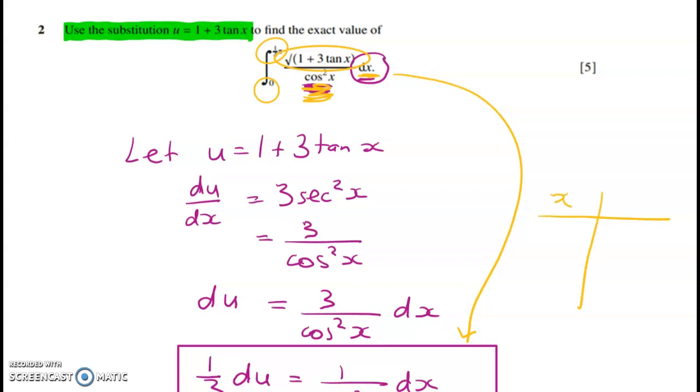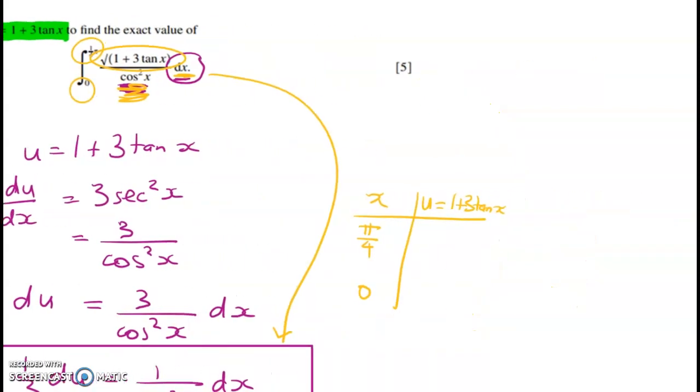We can do a little table here. We've got our x values, pi on 4 and 0 here. And we've got u is equal to 1 plus 3 tan x. Now at this stage in the year because we've done heaps of trig we should know that tan of pi on 4 is going to be 1. So if that's 45 degrees we've got a 1, 1, root 2 triangle. That means that u will equal 1 plus 3, and u will equal 1 plus tan of 0 is 0, so it's 1 plus 0. So my limits change over to 4 and 1.